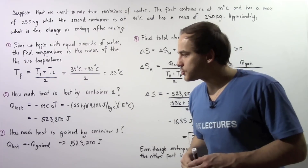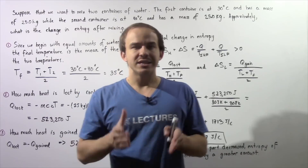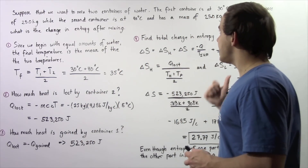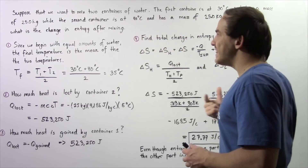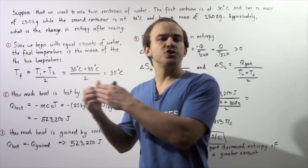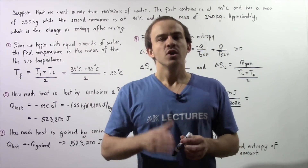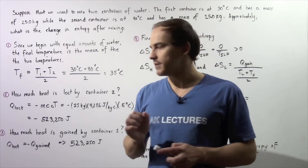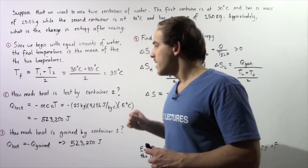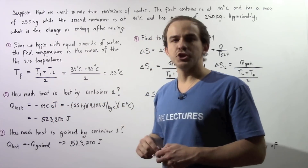Now let's move on to step two: how much energy is lost by the water in container number two? The water in container two has a temperature of 40 degrees, and it drops to 35 degrees. Because there's a temperature drop, energy must flow out of the system. To calculate how much energy flows out, we use the concept of calorimetry. The energy lost by container two, Q_loss, is equal to negative multiplied by the mass, multiplied by the specific heat, multiplied by the change in temperature.